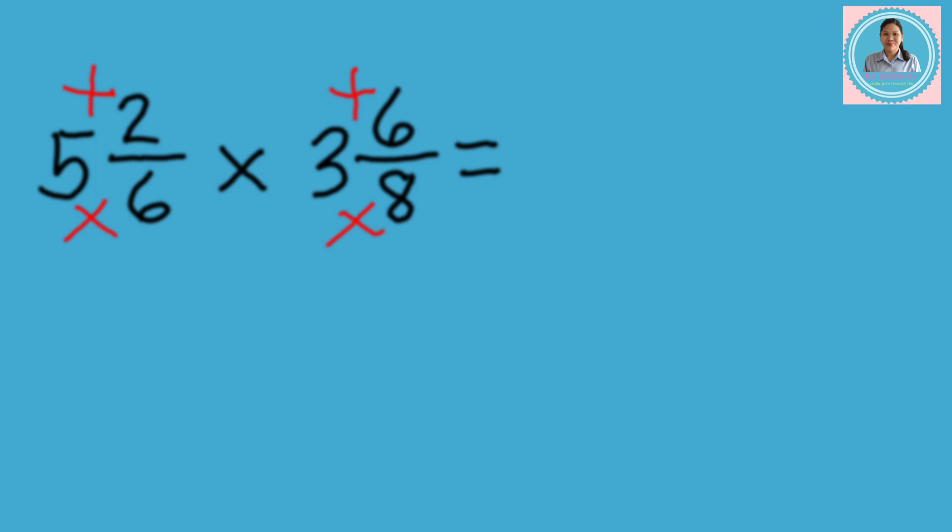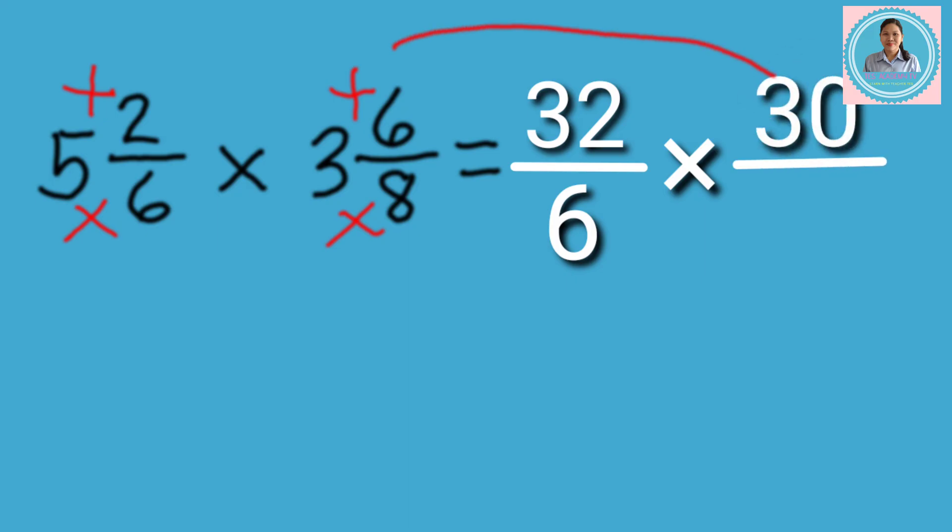Let's answer. 6 times 5 equals 30 plus 2 equals 32. Copy the denominator, 6. Do the same in the multiplier. 8 times 3 equals 24 plus 6 equals 30. Next, copy the denominator, 8.